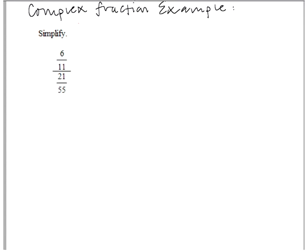So let's begin by recalling that the fraction bar is just another way of denoting division. So when we look at this example we have 6 over 11 in the numerator and then a fraction bar and then 21 over 55 in the denominator. Well this fraction bar we can actually rewrite as division.